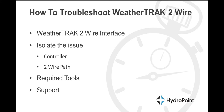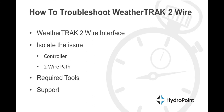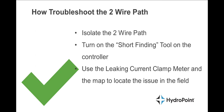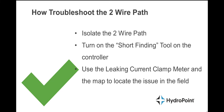The next question is always: where on the 2-Wire path? Let's talk about the WeatherTrack features that help find the problem. The first step in troubleshooting the 2-Wire path is isolating that path with the switches, keeping on only the path suspected of having a fault. Leave the bad path on and turn on the short finding tool on the controller. To do this, go to the WeatherTrack 2-Wire interface, hit cancel, get to the main screen, hit one arrow to the left to bring up the main menu, and the first option is 'Tests.'